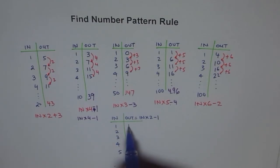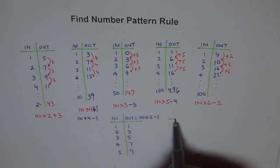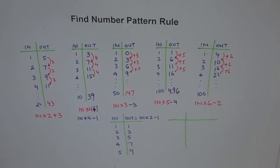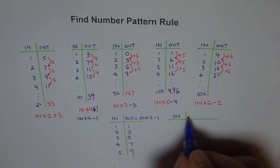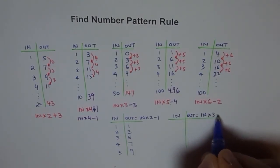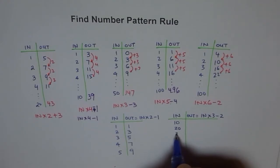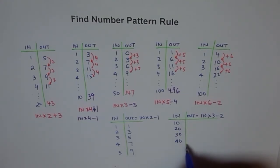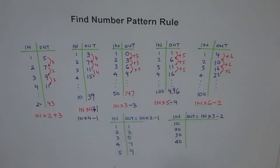Either way it works. You should write your own example and have fun with it. This time, output equals input times 3 minus 2. I'll write different input numbers: 10, 20, 30, 40 — do it yourself. Input times 3: 10 times 3 is 30, take away 2 is 28. Try to fill up these forms and make your own.